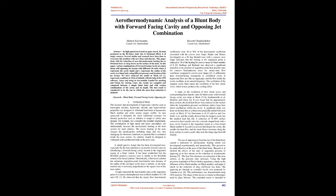This paper deals with the reduction of aerothermodynamic heating due to frictional force or drag forces on the surface of the body. Various combinations of forward-facing cavity are taken along with opposing jet stream with different R/D ratio, where D represents the cavity depth and R represents the radius of the cavity in a blunt body, using different pressure and location of the jet stream. The model is analyzed at Mach 6.2, i.e. supersonic condition at 11 kilometers of altitude, with the help of CFD software ANSYS, using its two modules: Gambit for meshing and Fluent for solving.